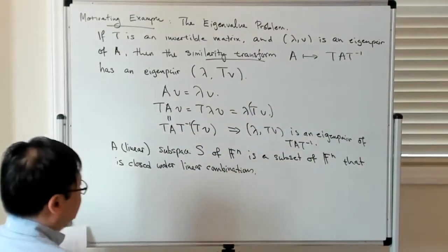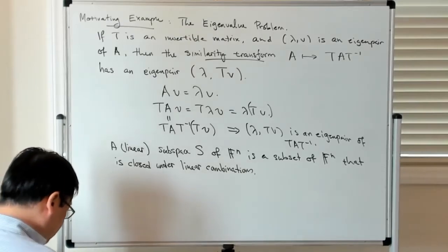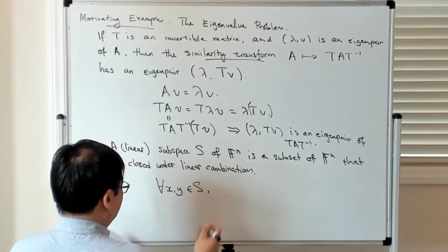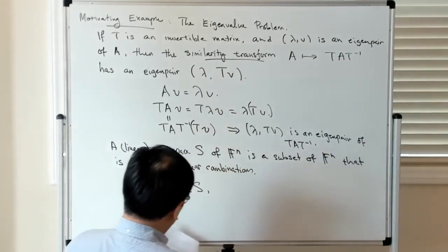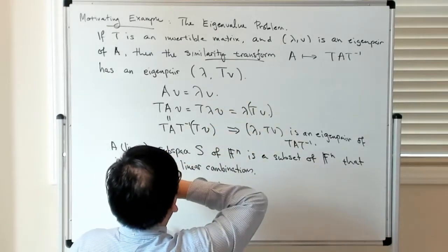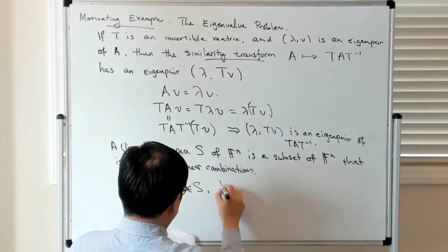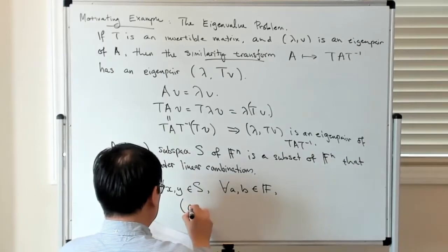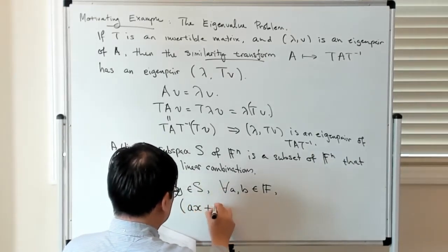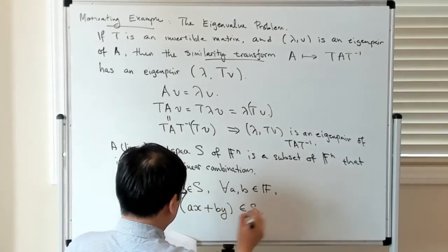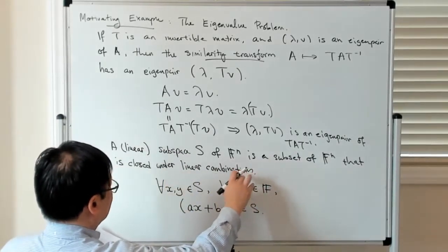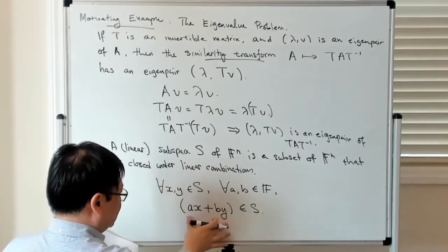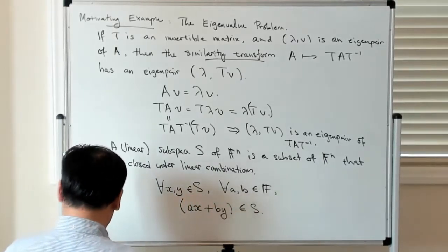What that means is that for all X and Y in S, and all possible coefficients A and B in the field, the linear combination A times X plus B times Y is still in S. So this is what is meant by saying the set S is closed under linear combinations.